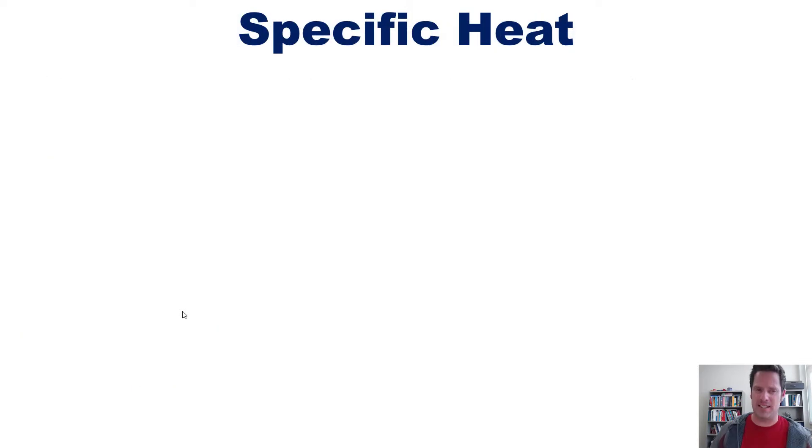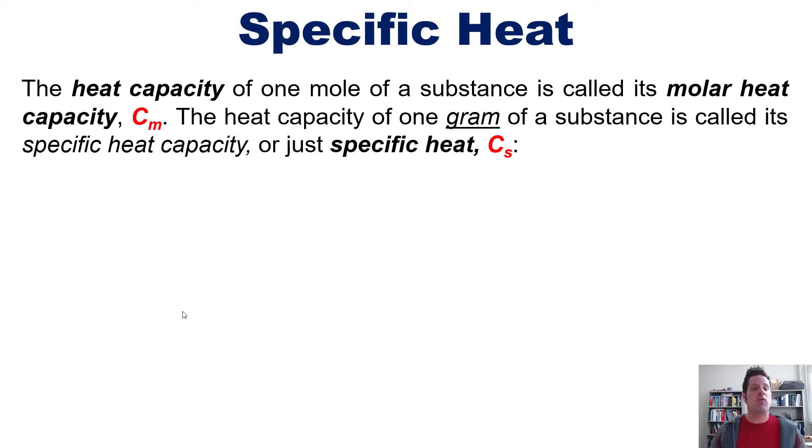This brings us to specific heat. The heat capacity of one mole of a substance is called its molar heat capacity or C sub M. In contrast, the heat capacity of one gram of a substance is called its specific heat capacity or just specific heat, C sub S. I frankly wish that specific heat were called the gramular heat capacity because it's essentially the same thing. C sub M is molar heat capacity, C sub S is gramular heat capacity. But we don't use the term gramular, we just call it specific heat. Nevertheless, that's what specific heat is.